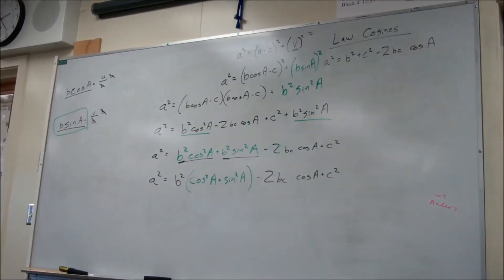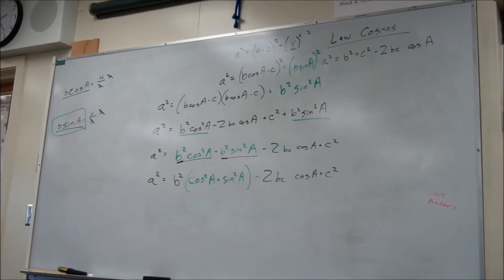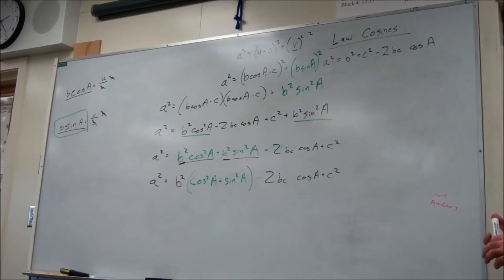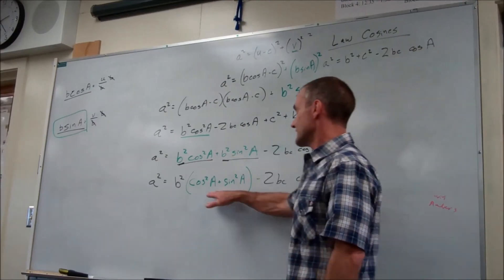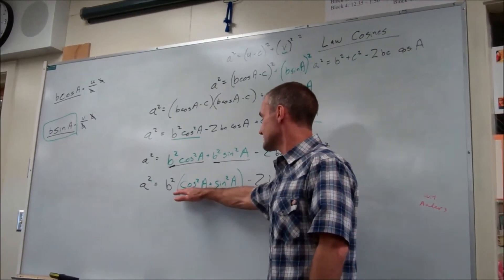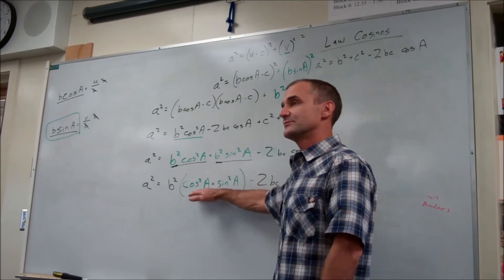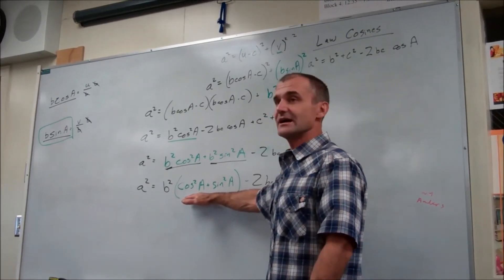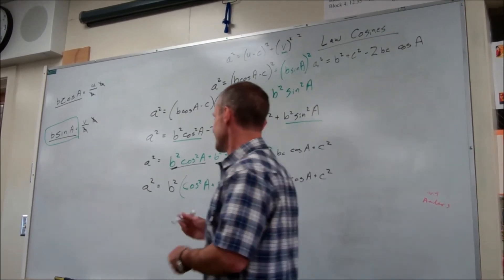And this is b squared. Anybody recognize anything there? I'm so lost. Josh? The cosine squared is a. Exactly. Cosine squared plus sine squared is equal to one. It's a Pythagorean identity. This whole thing is equal to one. Yeah, and this thing drops out.